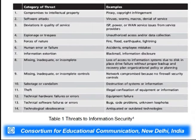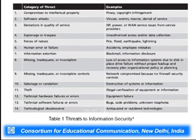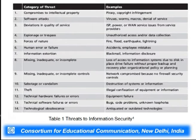The most discussed and important threats for information security number around 14 and are categorized based on particular attacks. These include: compromises to intellectual property, deliberate software attacks, divisions in quality of service, espionage or trespass, forces of nature, human error or failure, information extortion, missing or incomplete controls, sabotage or vandalism, theft, technical hardware failures or errors, technical software failures or errors, and technological obsolescence.